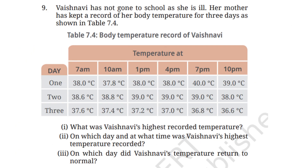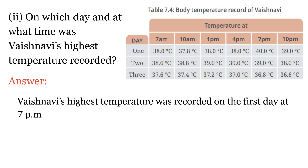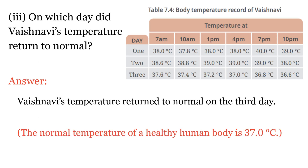Question 9: Vaishnavi has not gone to school as she is ill. Her mother kept a record of her body temperature for 3 days as shown in table 7.4. Vaishnavi's highest recorded temperature was 40°C, recorded on the first day at 7 pm. The normal body temperature is 37°C, so Vaishnavi's temperature returned to normal on the third day.